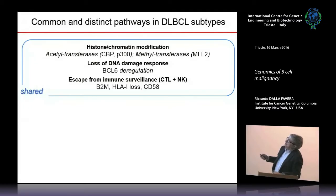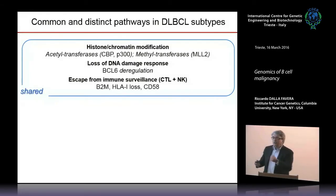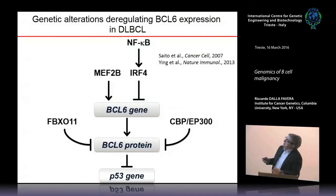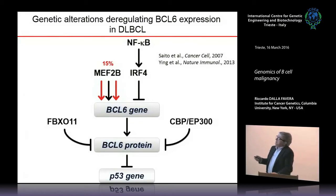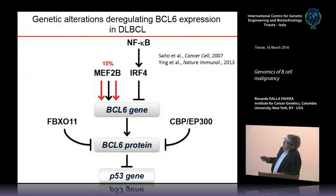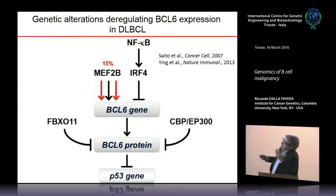For instance, there is a transcription factor called MEF2B, expressed in germinal center cells, which is mutated in 15% of cases. It directly targets the activation of BCL-6 at the beginning of the germinal center reaction. These mutations, which we published and characterized, have a dominant effect on BCL-6: they prevent the shutoff of MEF2B and enforce BCL-6 expression at non-physiologic levels.